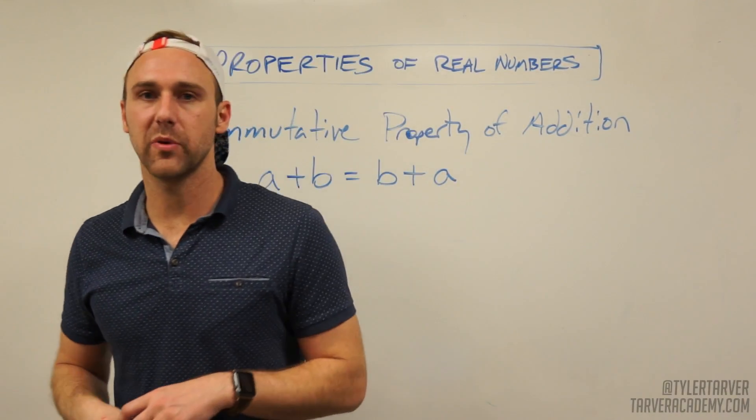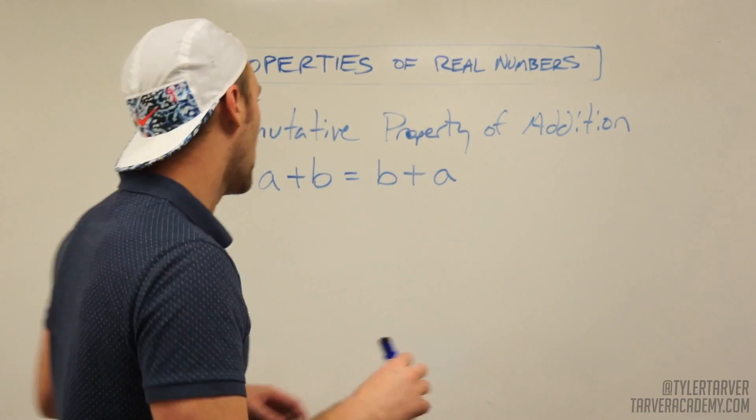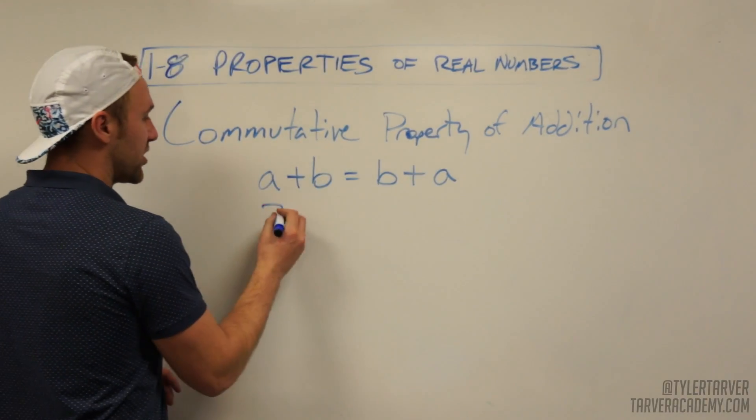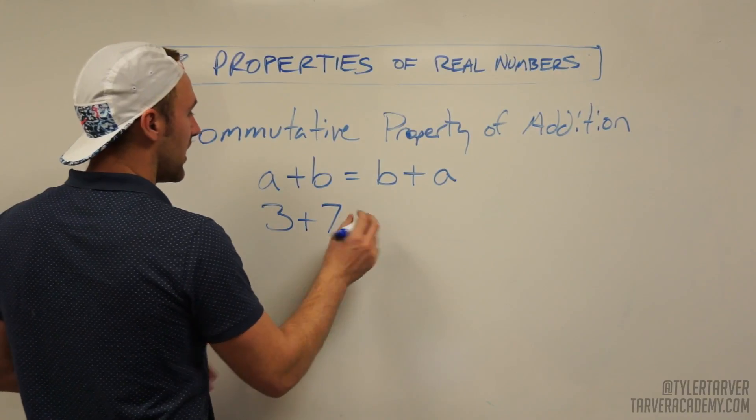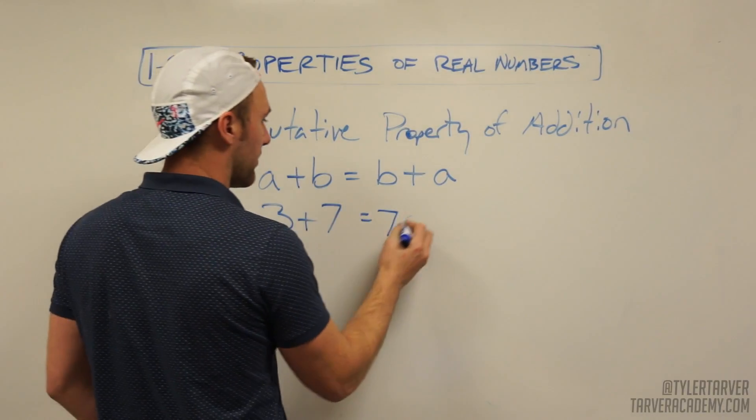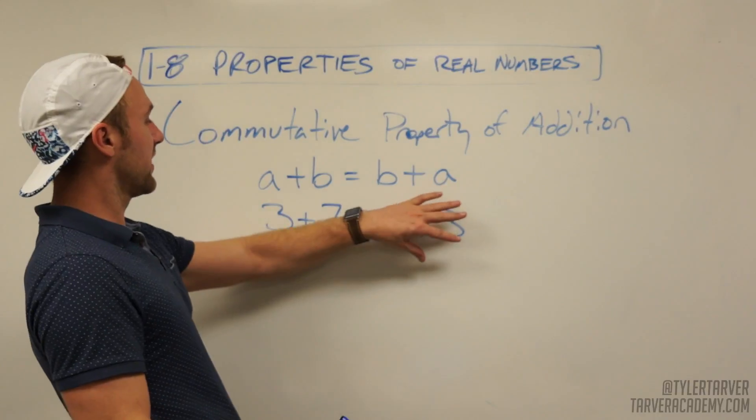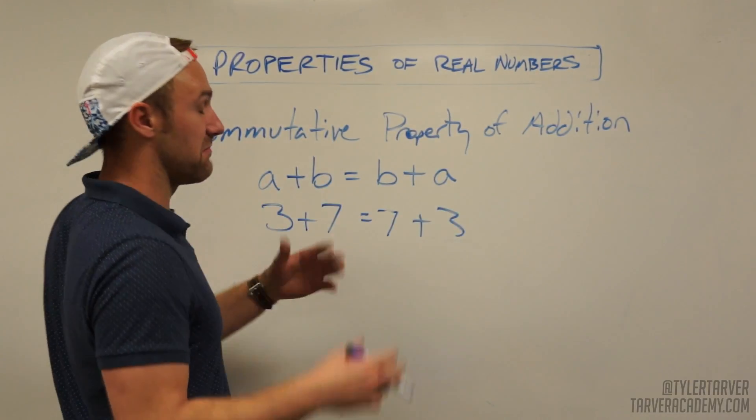You're thinking, oh, that seems pretty easy. Well, you would be correct. It is pretty easy. All you're looking at doing here is you take two numbers, three plus seven, and you can flip them. Seven plus three, and it's going to equal the same thing. Three plus seven is ten. Seven plus three is ten. Boom.